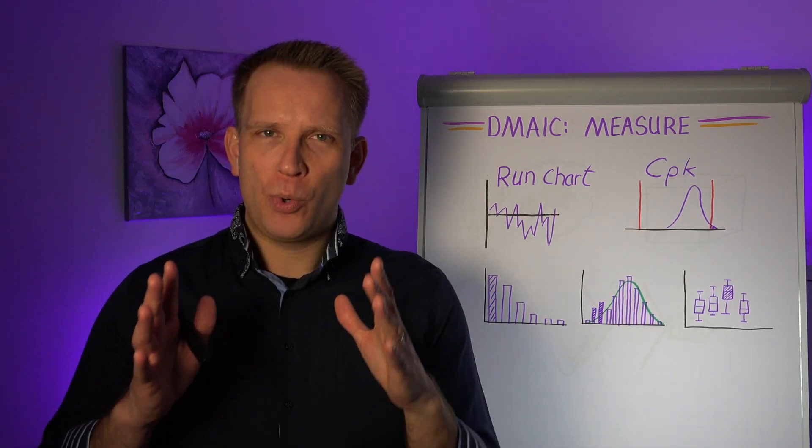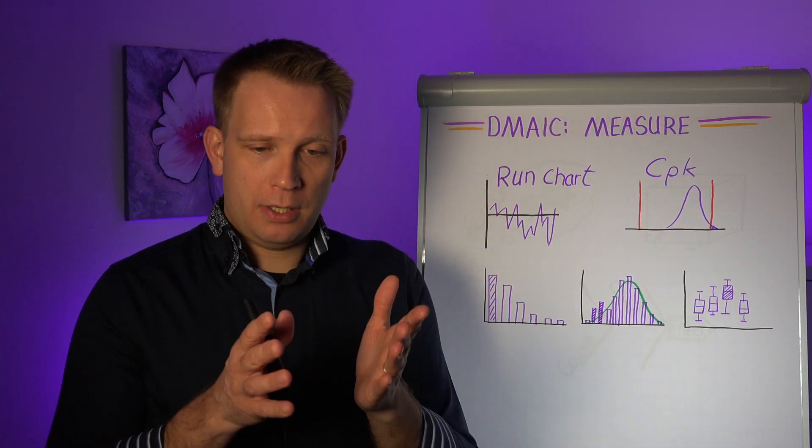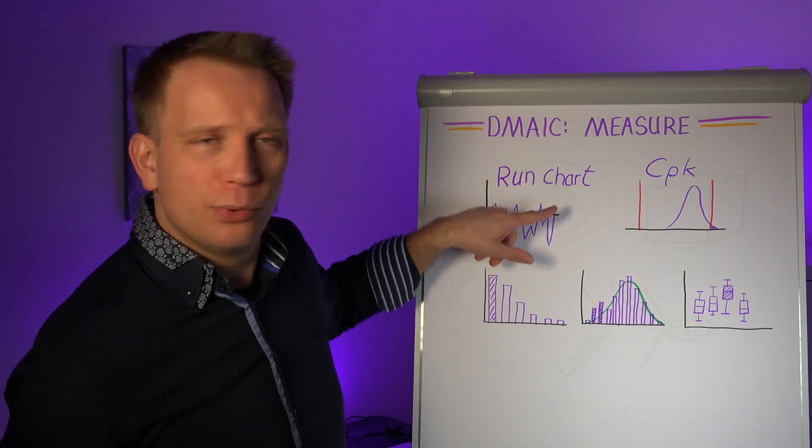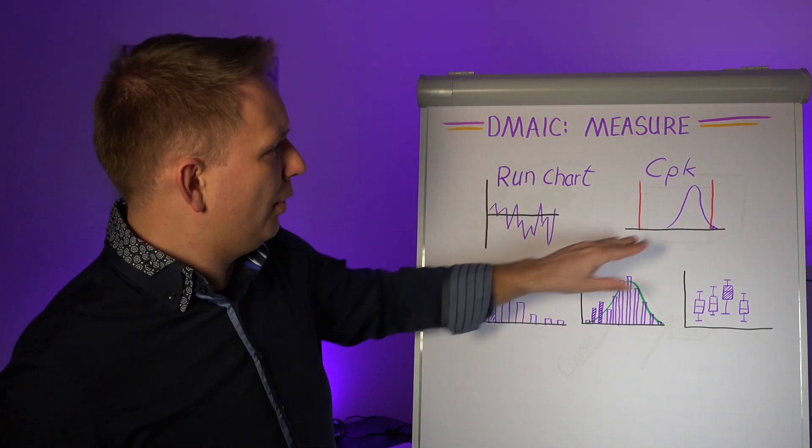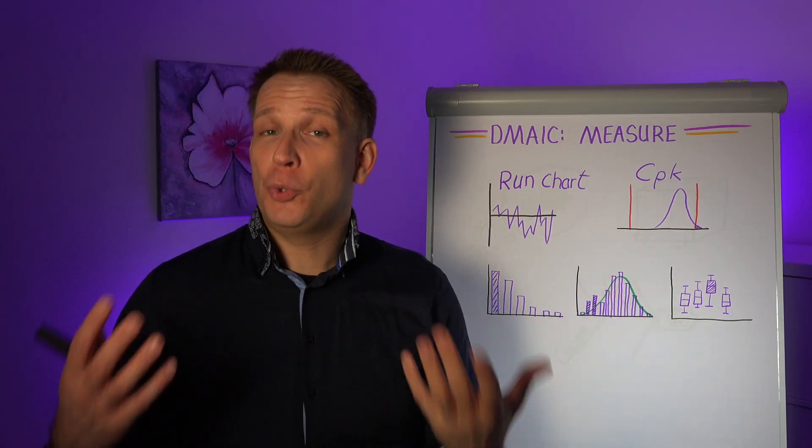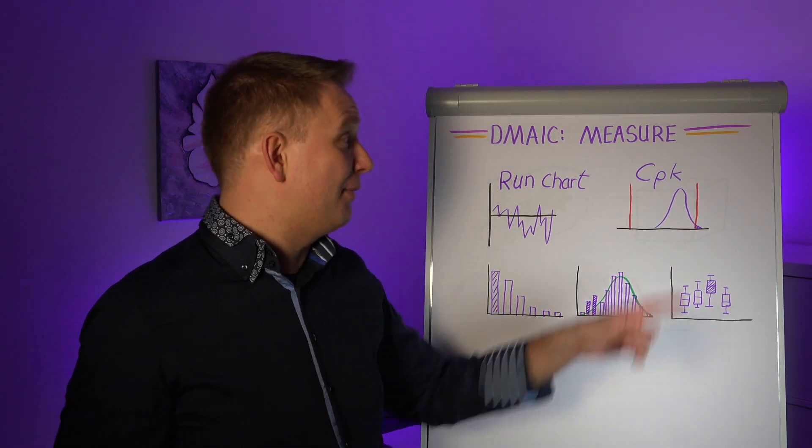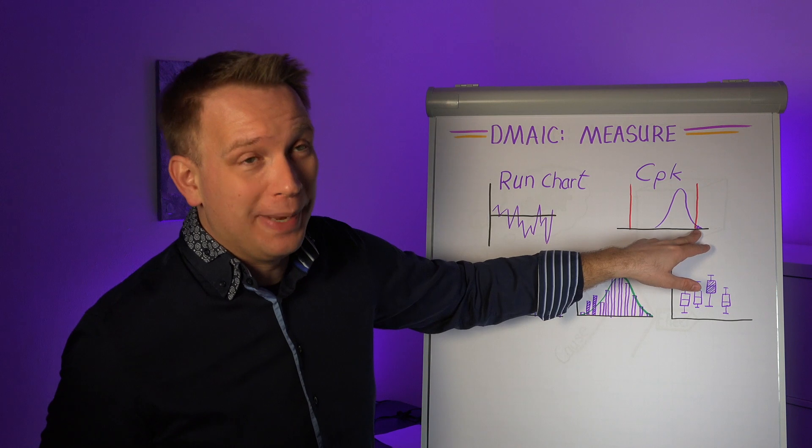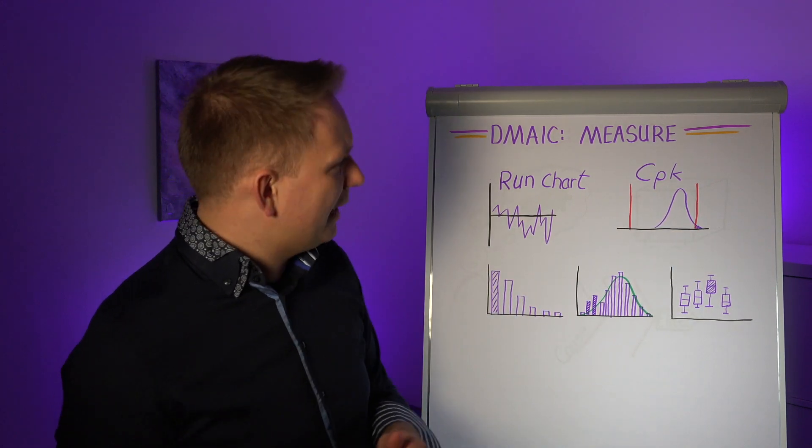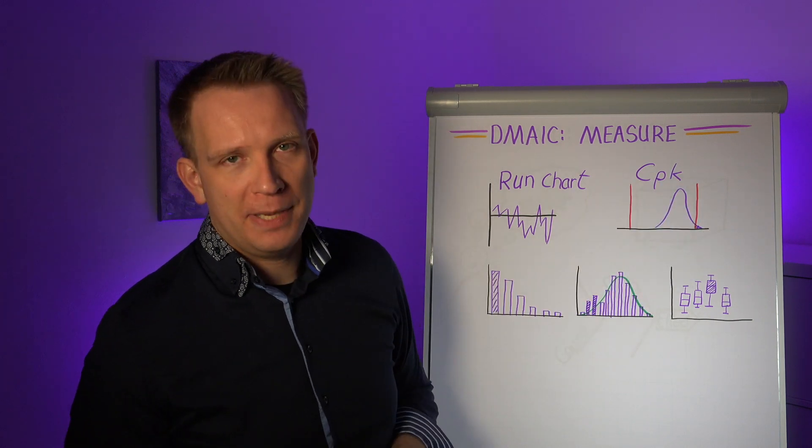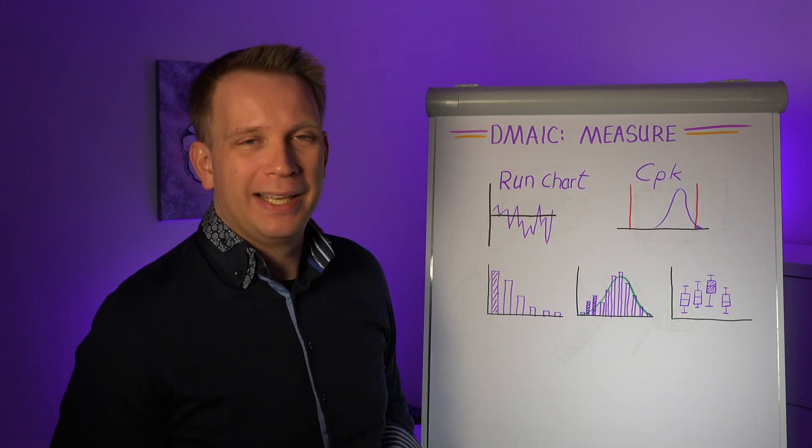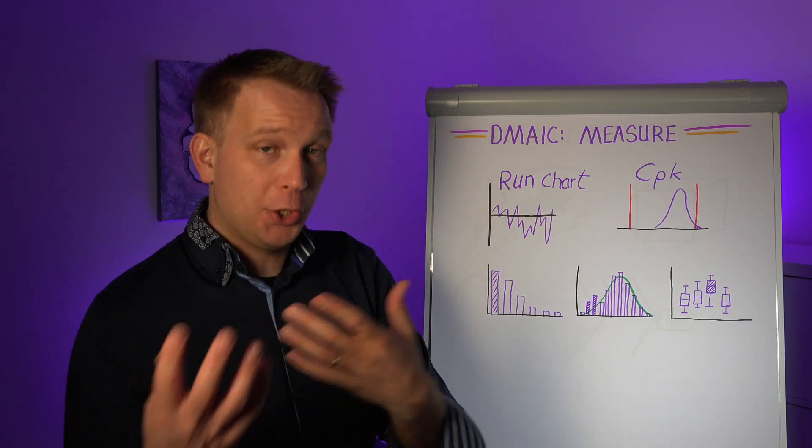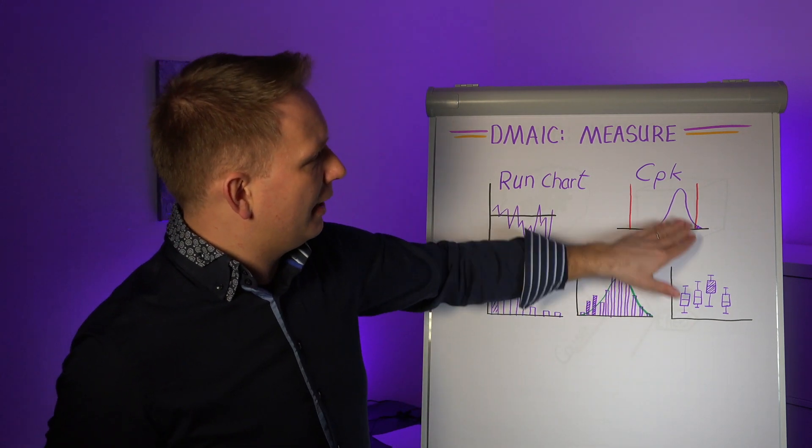And we're going to look at how capable is our process of producing within the specifications. And here we sort of took this whole run chart data and put it all together into one distribution. So this really is sort of a summary type of statistic. And in fact, the CPK will give you just one number. The number here is going to be lower than one. It's not going to be negative, luckily, because the average is still within the specifications. But you see that there's quite a bit already that is going out of specifications.